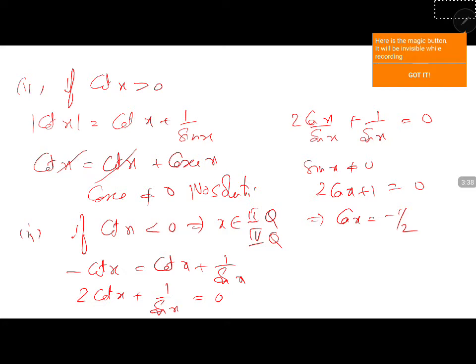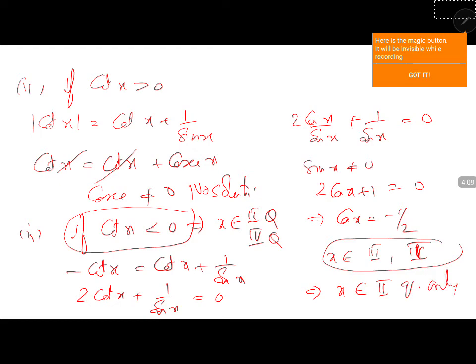This implies x belongs to negative means 3rd quadrant, 4th quadrant. But for this condition, the thing that is common is 4th, 3rd quadrant and 2nd quadrant. 2nd quadrant is the angle. This implies x belongs to 2nd quadrant only.